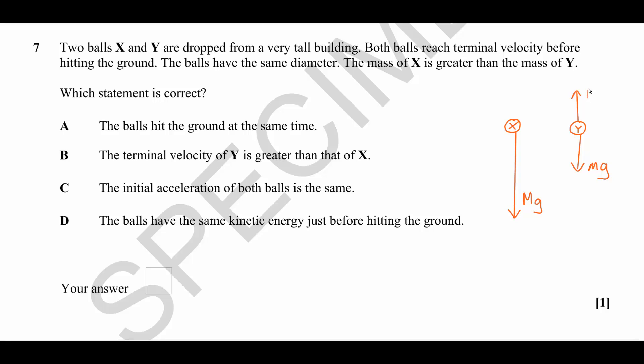You can see from my diagram that the drag here is roughly the same length as the weight. Y has reached terminal velocity, however X has not. X still has a net force acting down, it is still getting faster. Therefore, X will not hit the ground at the same time as Y because it is traveling faster. It's going to hit the ground well before Y does.